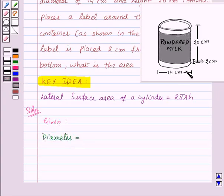is 14 centimeters. So this implies radius r is equal to 14 upon 2 centimeters, that is equal to 7 centimeters.